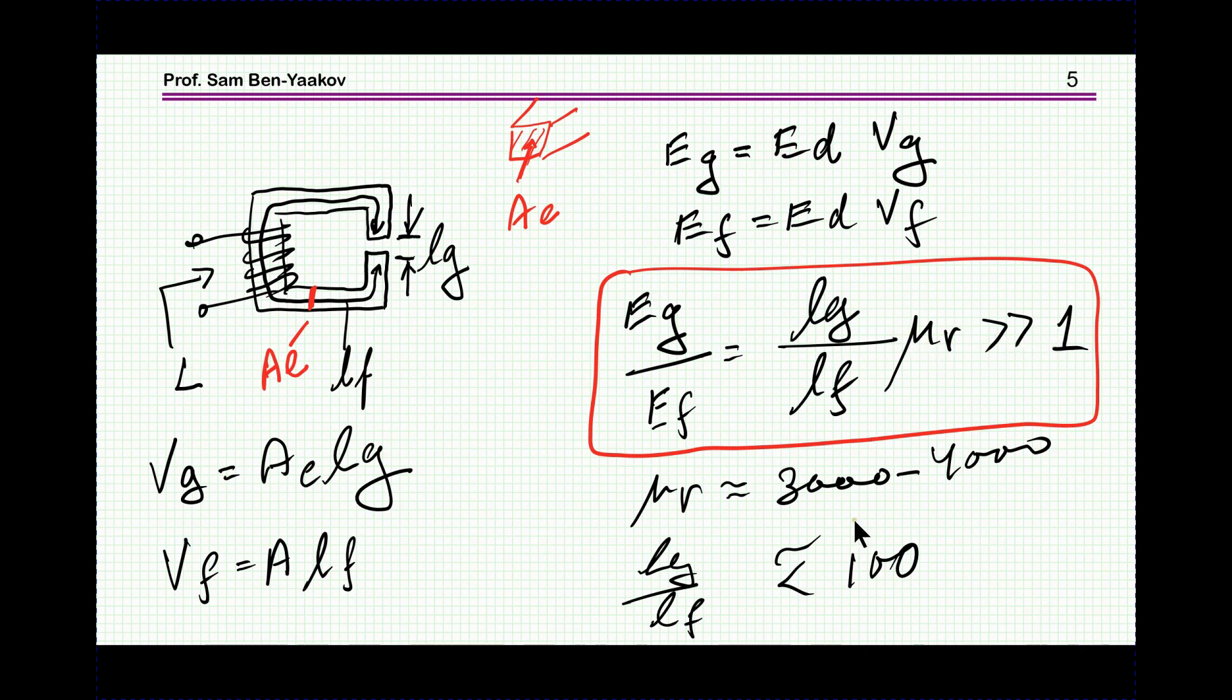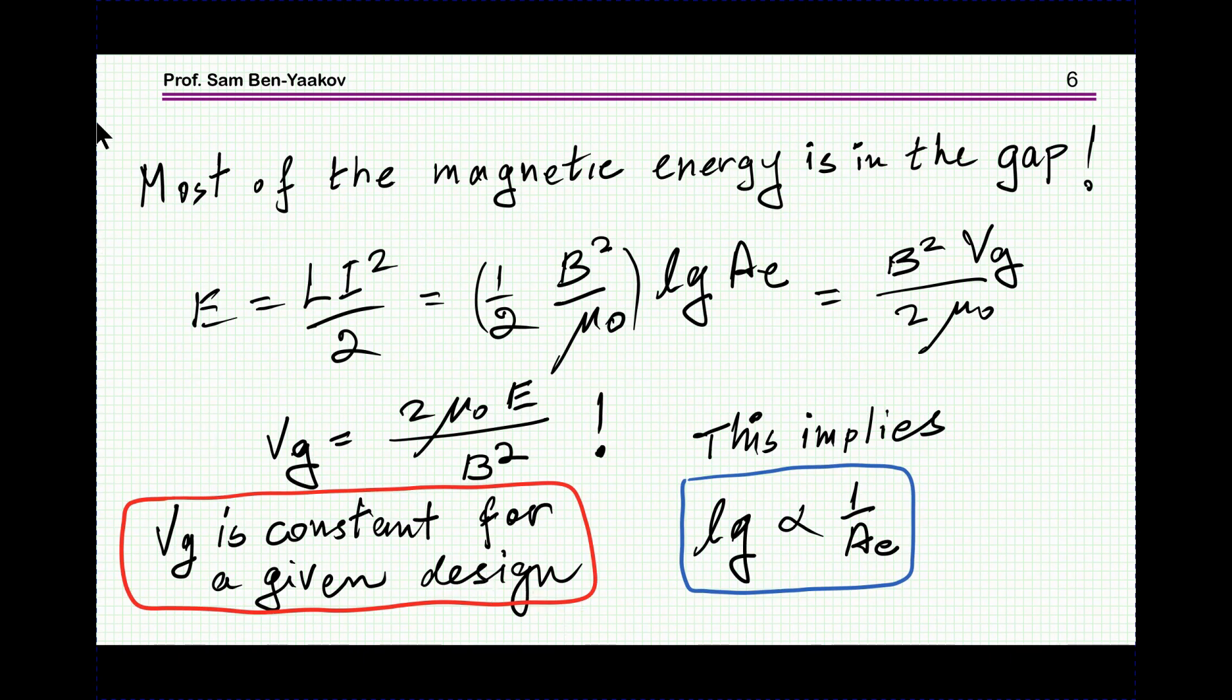This number is much larger than one because μR is a large number. LG over LF could be like one over a hundred, so we have three thousand divided by a hundred, which is thirty. Therefore, it's clear that most of the magnetic energy is in the gap—certainly more than ten times than in the ferrite and probably much more depending on the length of the gap.